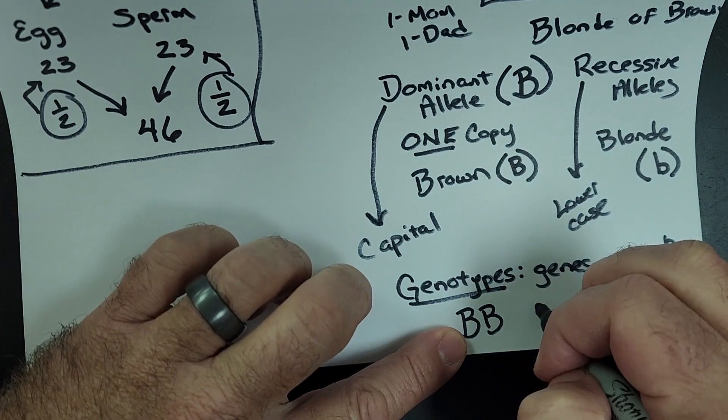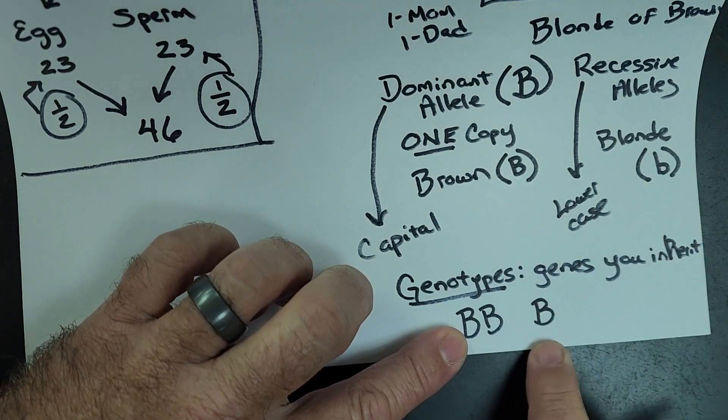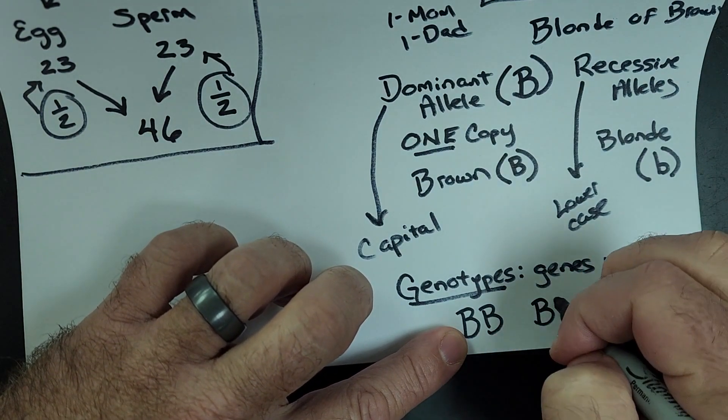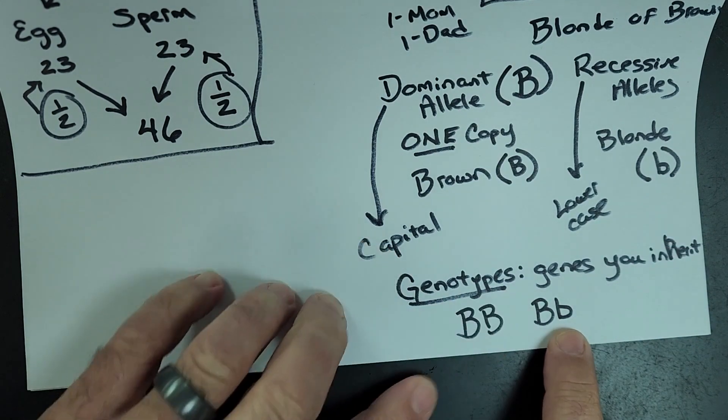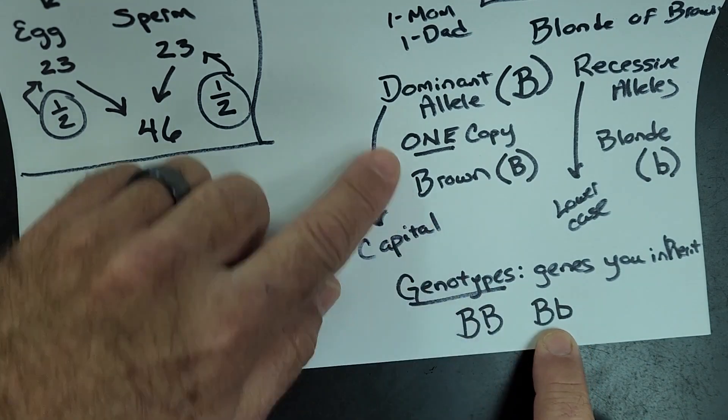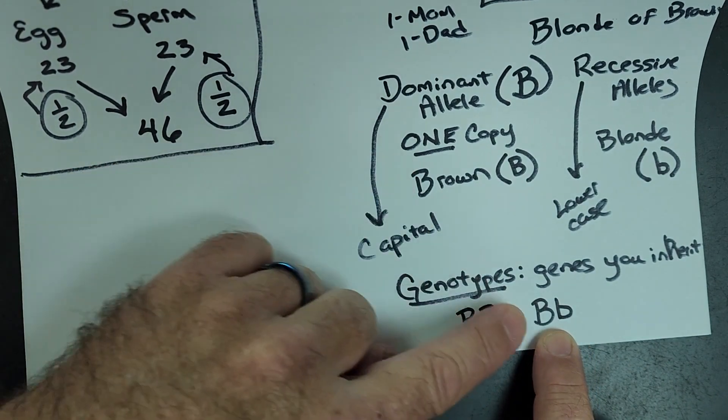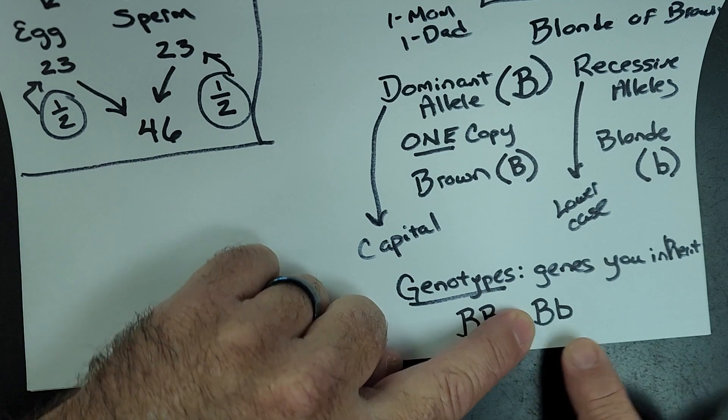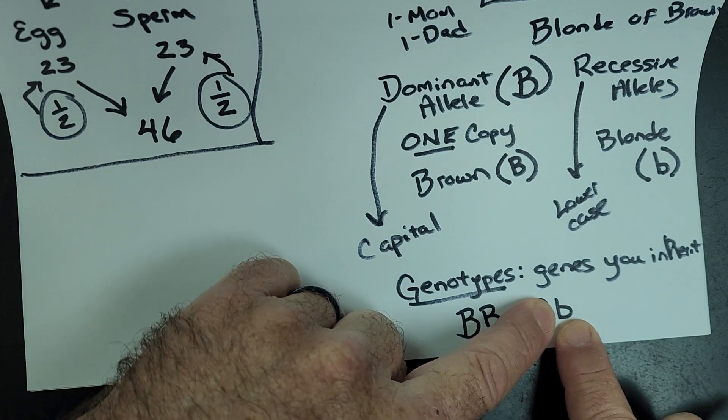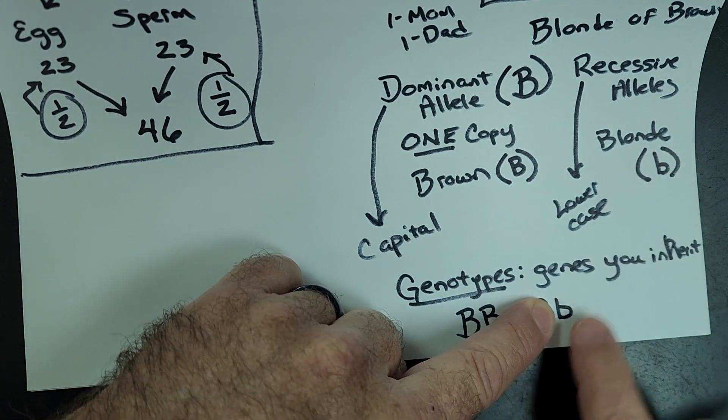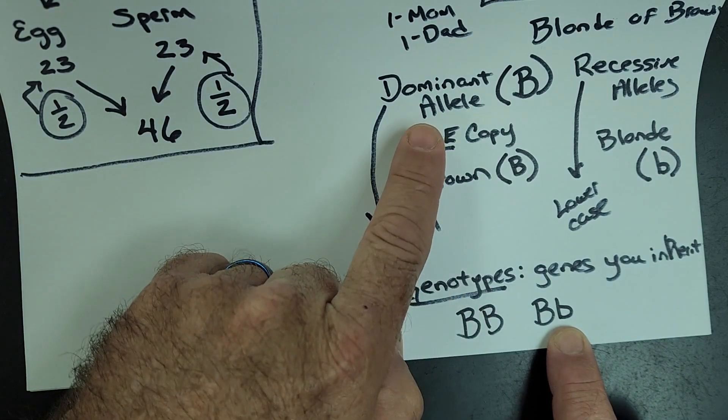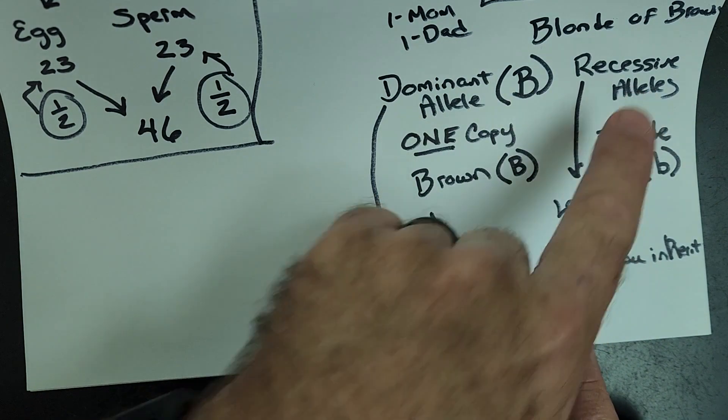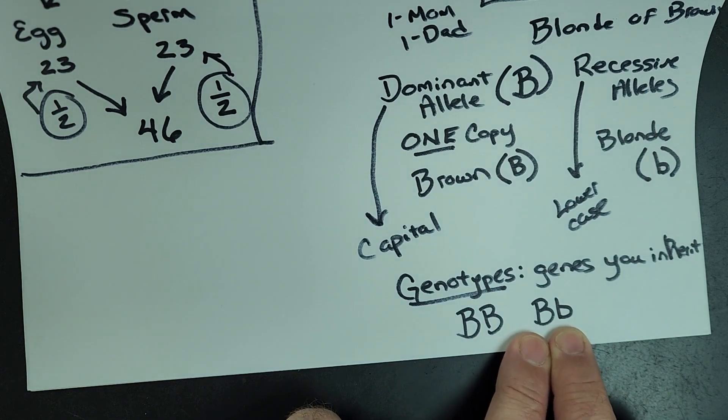You could get one dominant from mom and one recessive from dad. It also works the other way, one dominant from dad, one recessive from mom. Regardless though, you got one copy of the dominant gene. So even though you are carrying that recessive gene, you do not have blonde hair. You have brown hair because brown is dominant over recessive. And that's how dominance works.